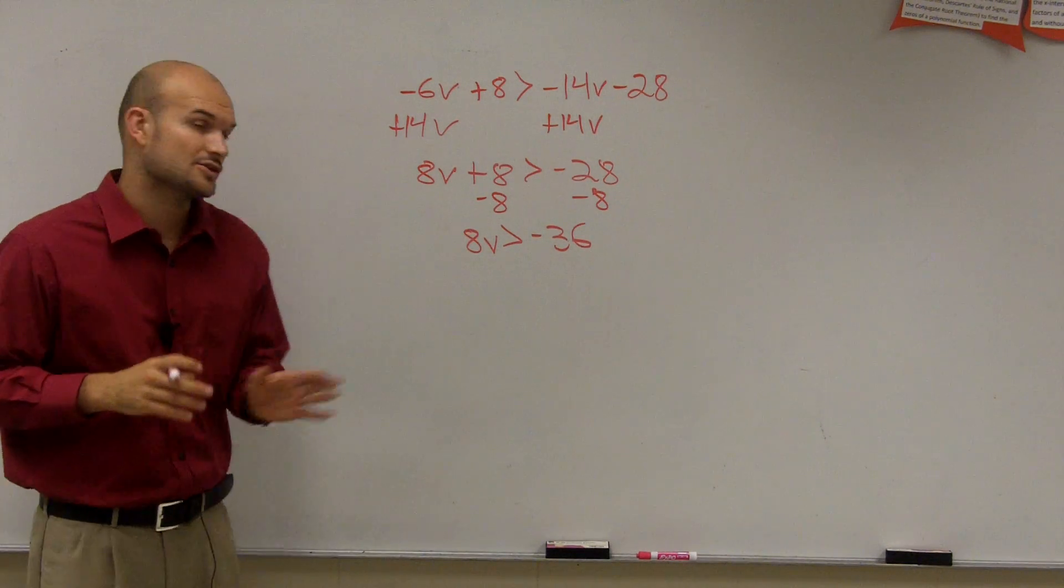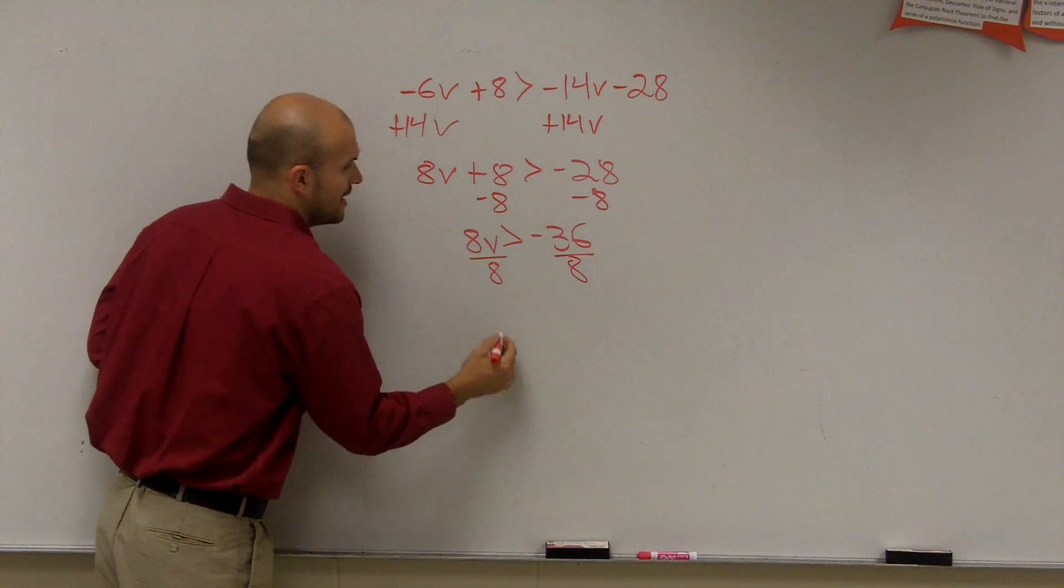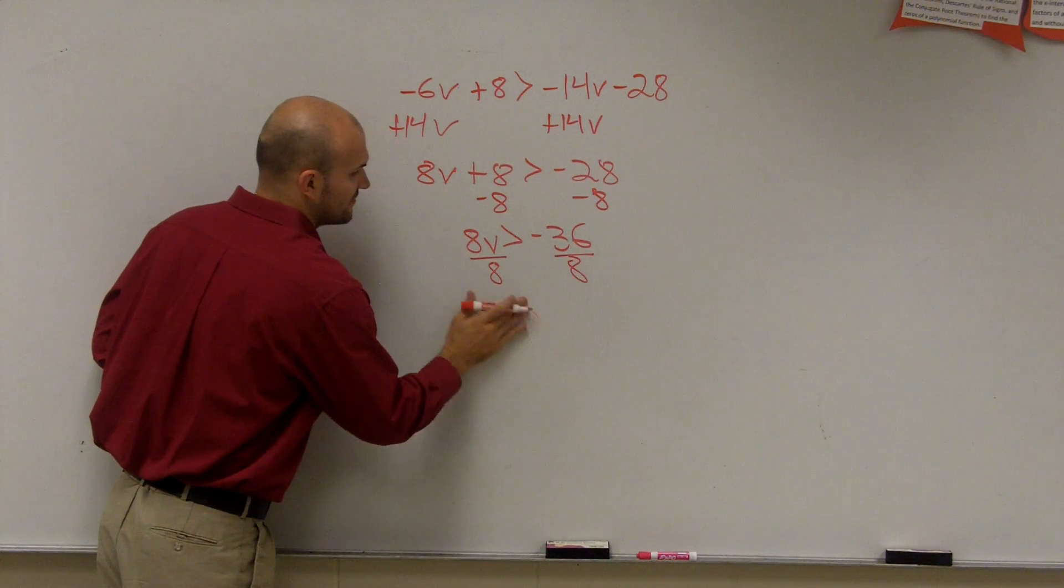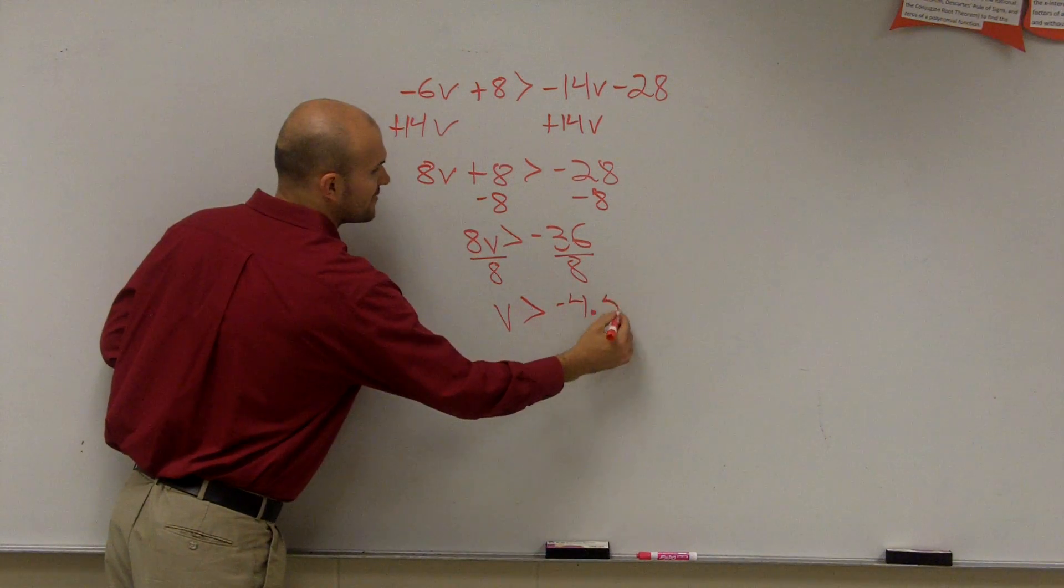So now, the next thing I need to do is divide by 8 on both sides. And I get v, not greater than, v is greater than negative 4.5.